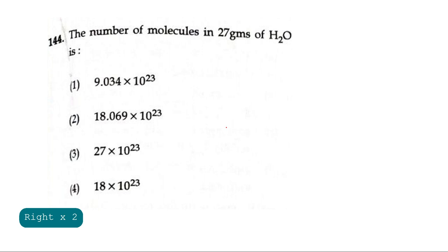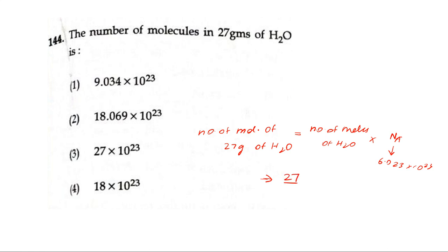Question 144: The number of molecules in 27 grams of water is? If they ask to find the number of molecules, we write it as number of molecules of given mass, 27 grams of water, equals number of moles of the given compound, number of moles of H2O water, into Avogadro number. We know the value of Avogadro number is 6.023 × 10^23. The number of moles is calculated as 27, the given mass, divided by molecular weight 18 for water, into 6.023 × 10^23. By multiplying this we get the answer as 9.034 × 10^23.